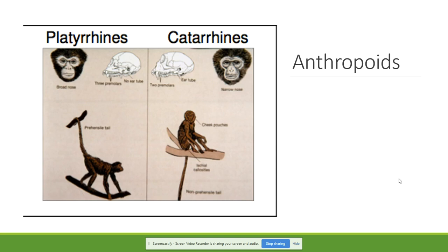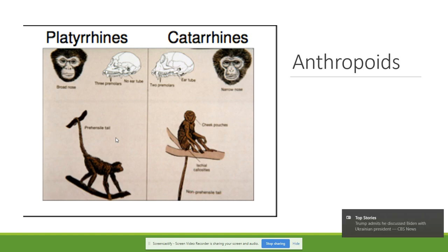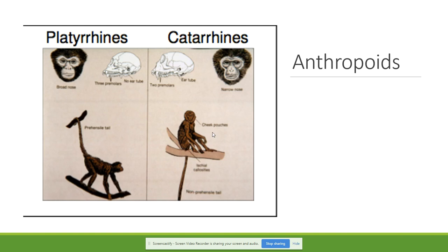Here we have a picture showing this: platyrrhines with the broad nose and nostrils facing outward, catarrhines with the narrow nose and nostrils facing downward. Another very important trait is that platyrrhines have a prehensile tail — a tail that acts like a hand, able to grab and manipulate objects. Platyrrhines are also the only ones that live completely in trees; we only see terrestrial anthropoids among the catarrhines.